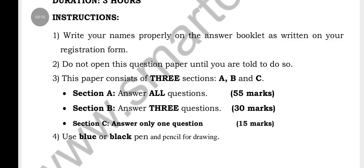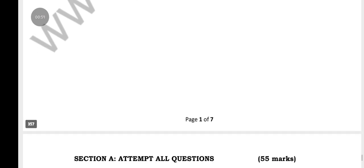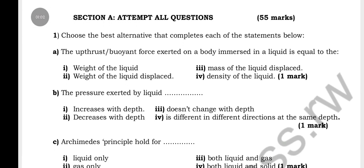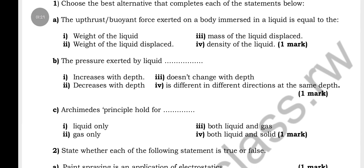Here are the questions for this physics exam. Section A comprises 55 marks, Section B is 30 marks, and there is a compulsory question. The instruction says to choose the best alternative that completes each of the following statements. For example, question one is about the upthrust force exerted on a body immersed in a liquid — these are multiple choice questions.